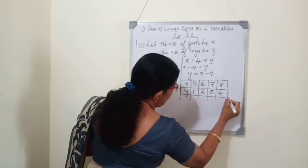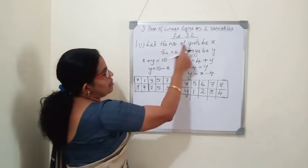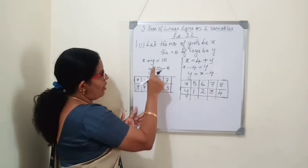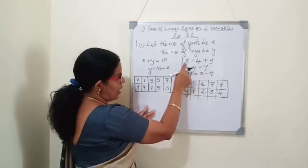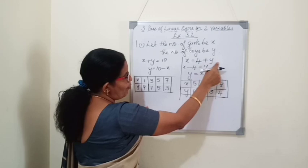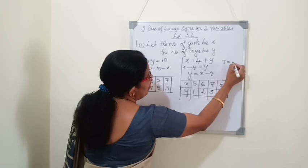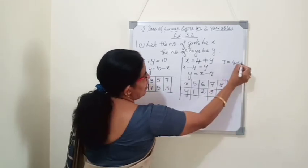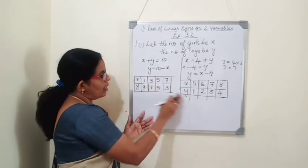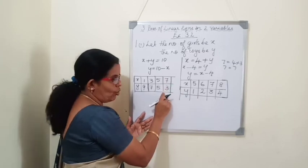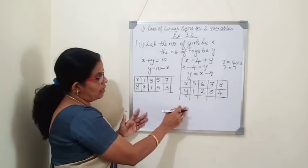We got the answer before drawing the graph: the solution is x equals 7, y equals 3. Verification: number of girls (7) equals 4 plus number of boys (3), which gives 7 equals 7. Now we will plot the points in the graph sheet. For the first equation y equals 10 minus x, we plot the points (1,9), (3,7), (5,5), and (7,3).